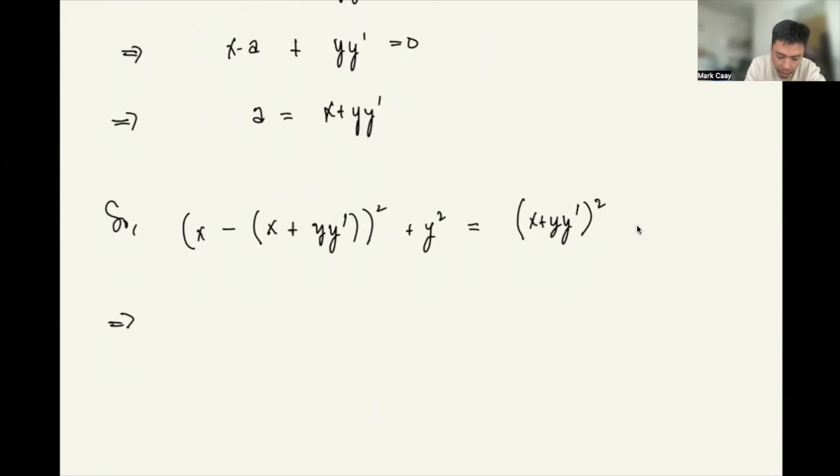is equal to x plus y y prime squared. So I can simplify this. This becomes y y prime squared, because this will cancel.